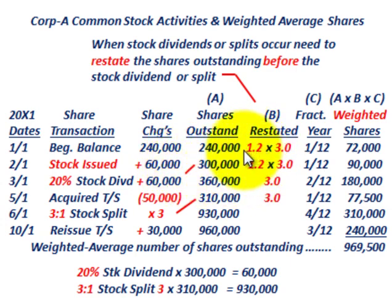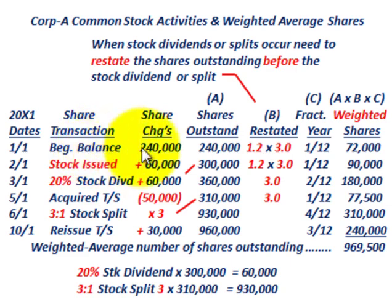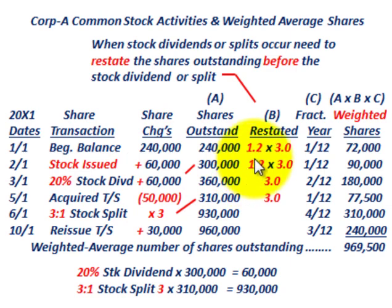Now, the key point: because we have stock dividends and a stock split, we need to restate the shares outstanding before each of those events in order to calculate weighted shares. For the 20% stock dividend on March 1st, we restate anything prior to it — the beginning balance and the shares issued — by multiplying by 1.2. That's the first restating factor based on the stock dividend.